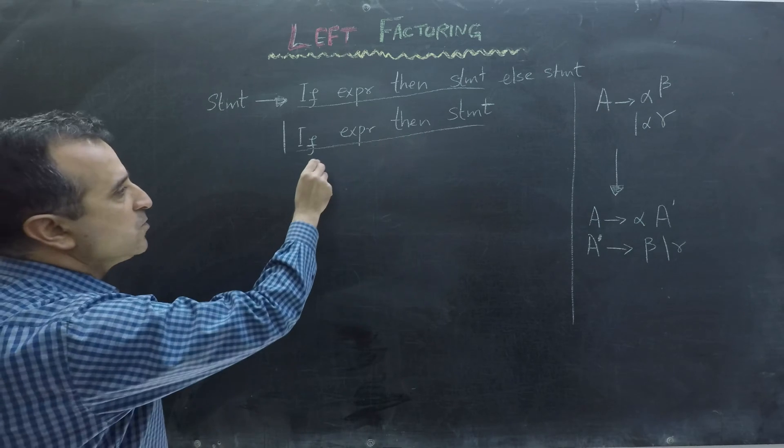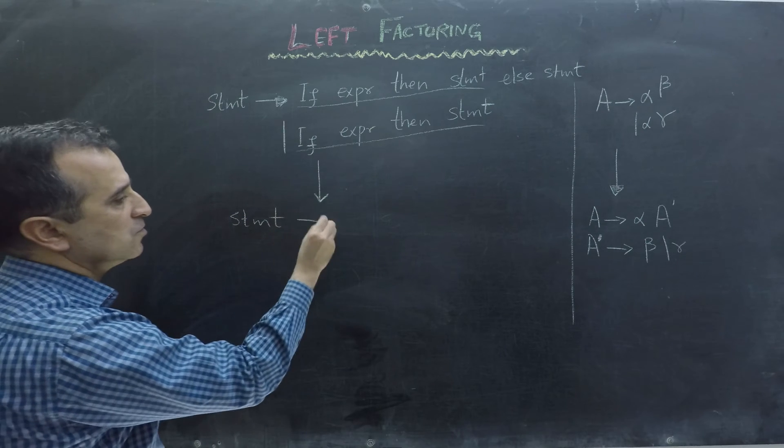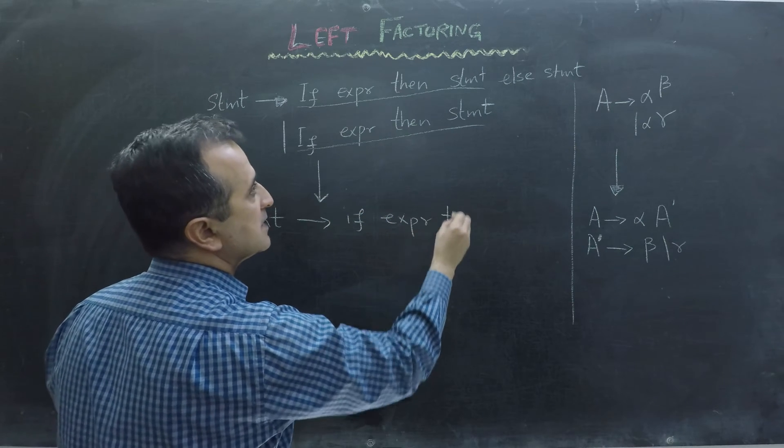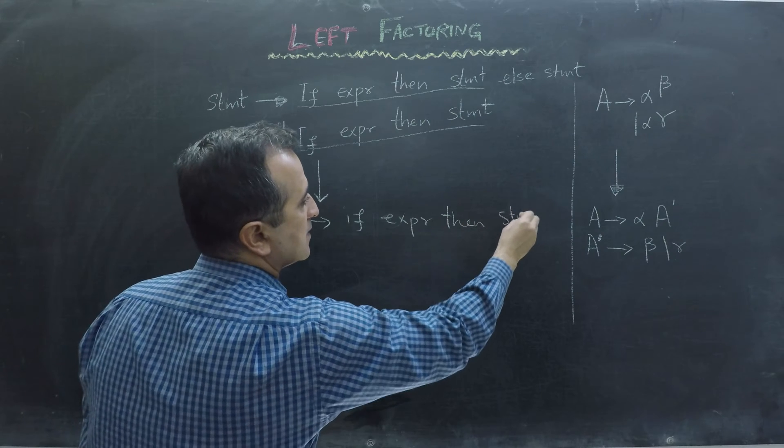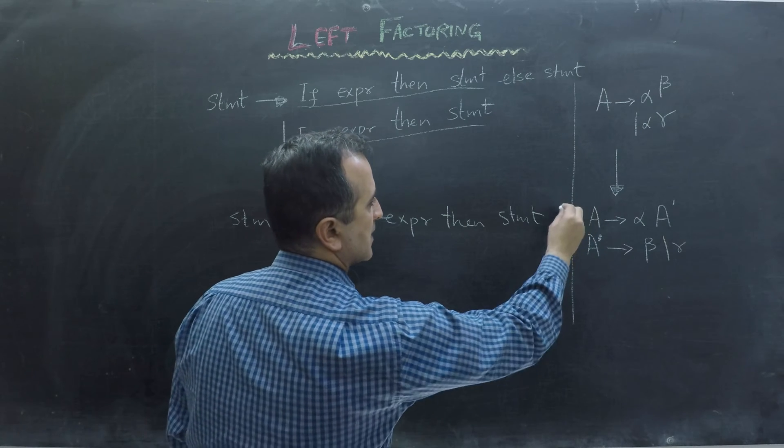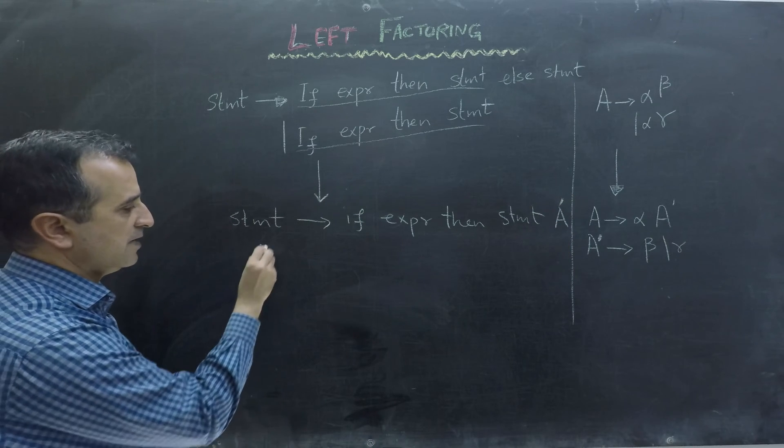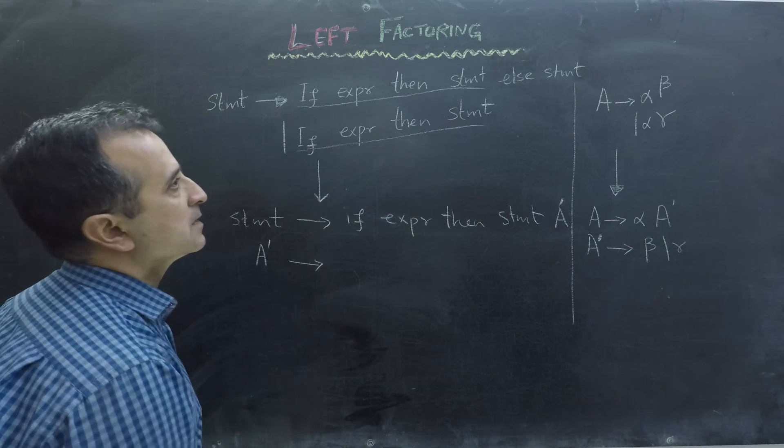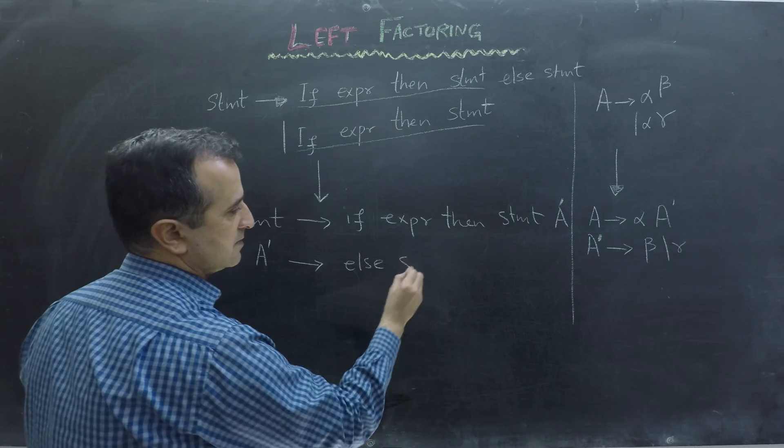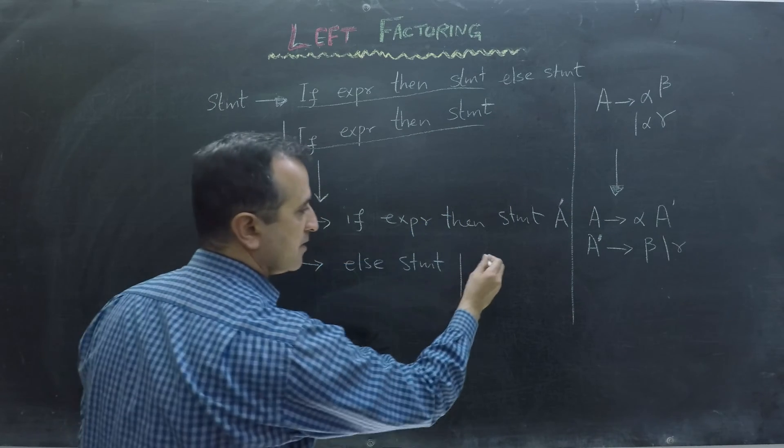So to remove common prefix, we have to rewrite this grammar as statement goes to if expression then statement. And then we write a new non-terminal, say A bar or a statement bar. So where A bar goes to else statement or empty string epsilon.